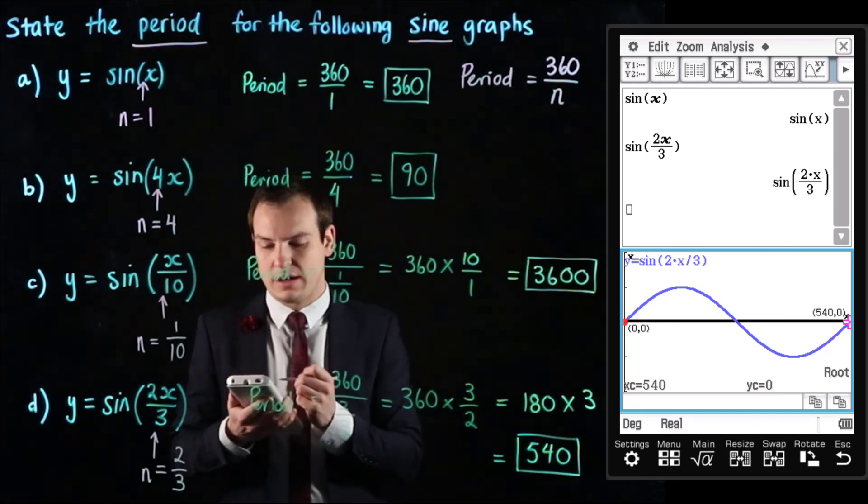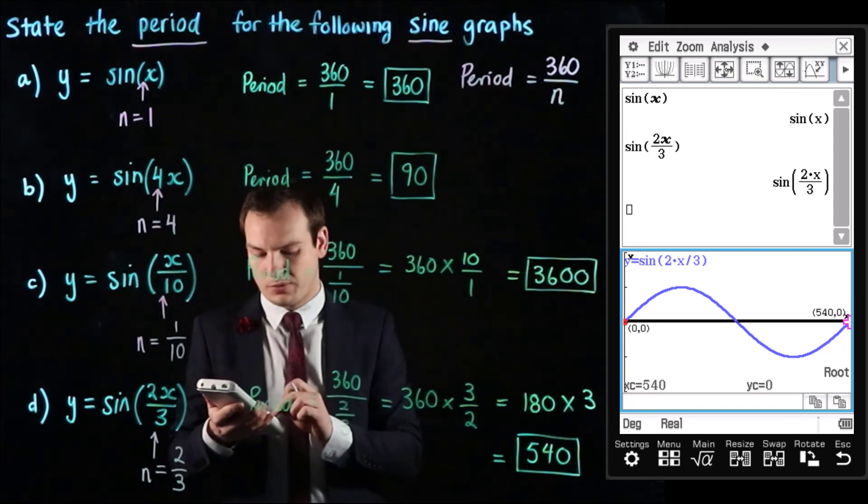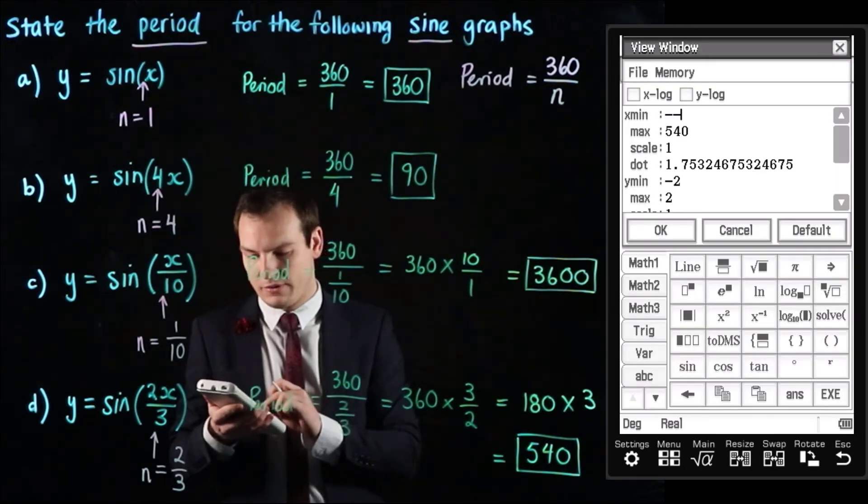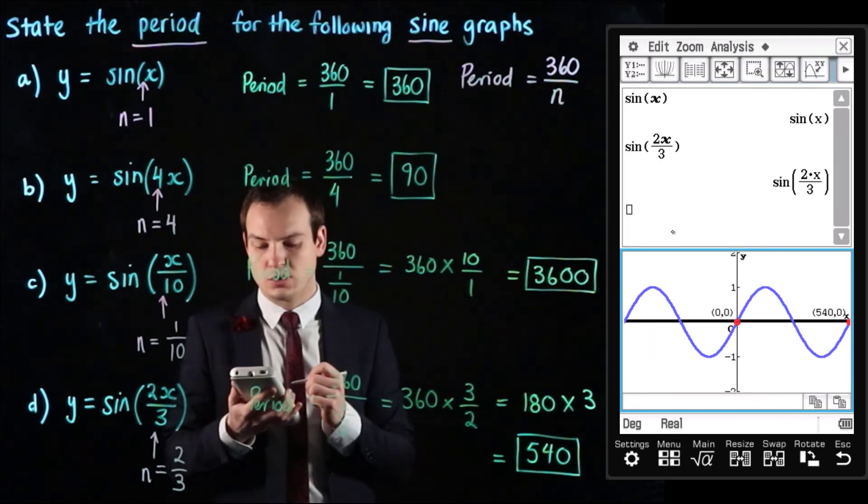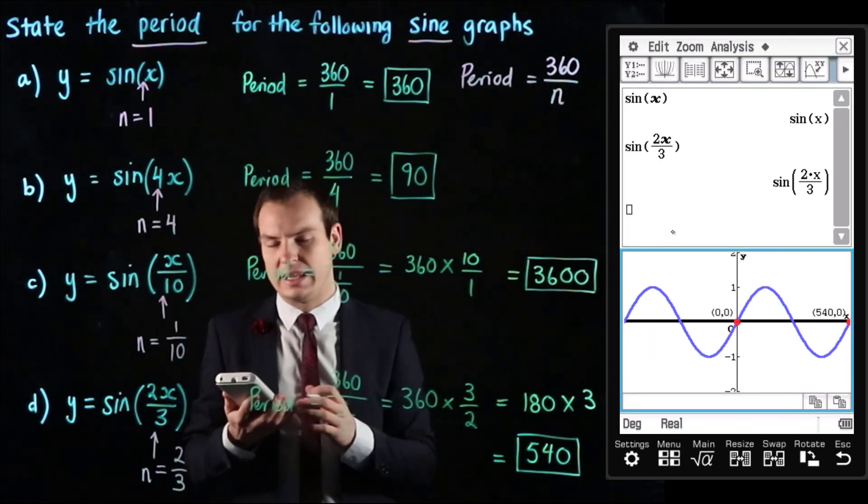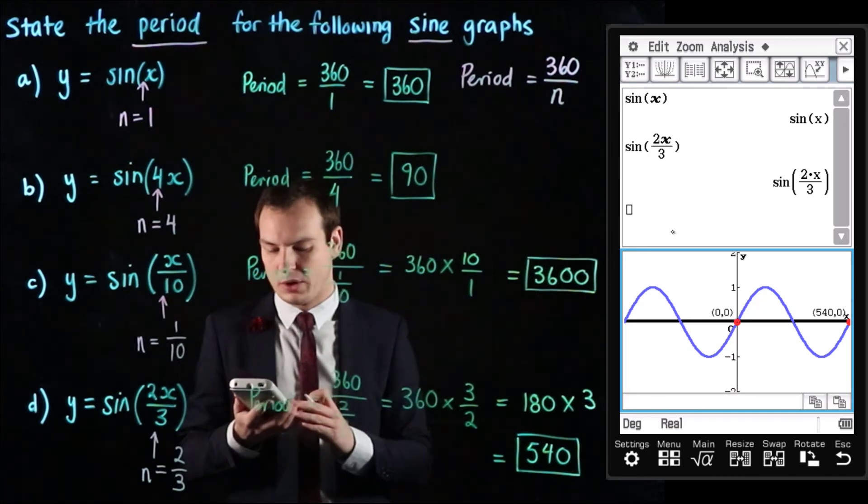Now once again if I change that view screen and this time went from an x minimum of negative 540 to 540 hitting ok will show two cycles of the graph one in the negative x direction and one in the positive x direction.